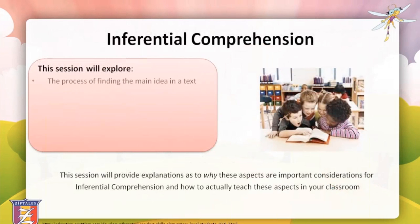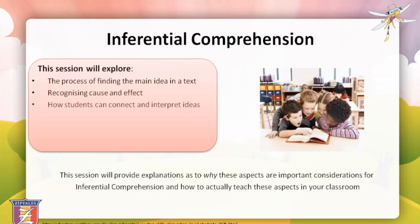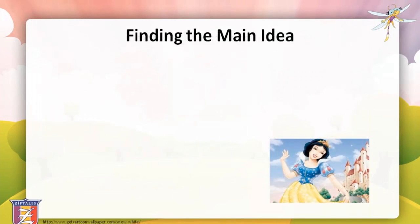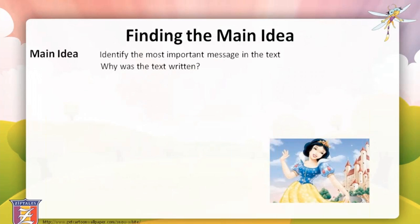In this session, the following key inferential comprehension skills will be explored: finding the main idea in the text, recognising cause and effect, connecting and interpreting ideas, distinguishing fact from opinion, identifying a sequence of events, and inferring the author's feelings about the text. We will look at what each one actually means and why it is an important skill. You will then be provided with some practical focus activities for each skill to use in your classroom.